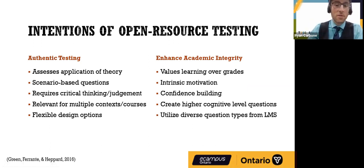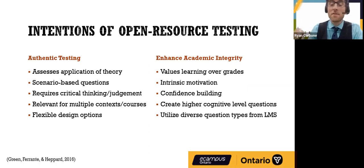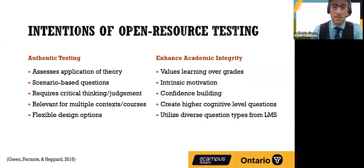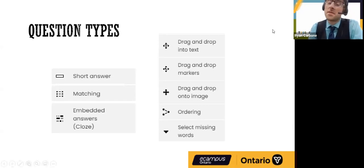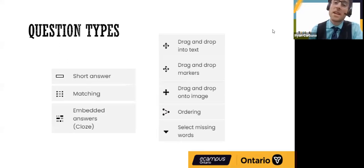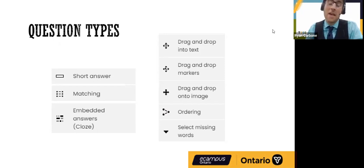Accessing higher levels of the Bloom's scale also allows us to tap into diverse question types available within our LMS. At Cambrian, our LMS is Moodle, and there are many question types available. These include short answer, matching, embedded answers or cloze type — very useful for unfolding case studies — drag and drop onto text or images, and ordering questions, which I find always push students to higher levels of Bloom's taxonomy by requiring them to distinguish between pieces of information and arrange parts accordingly.